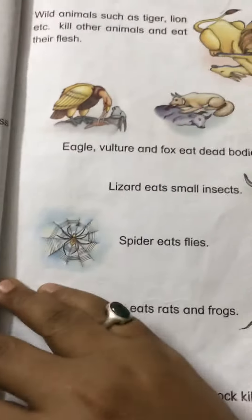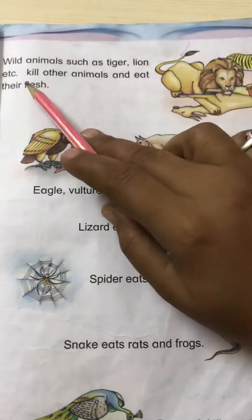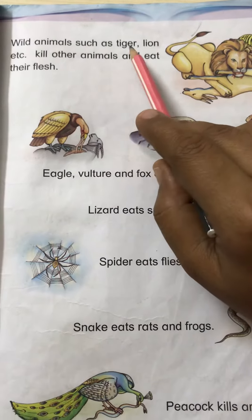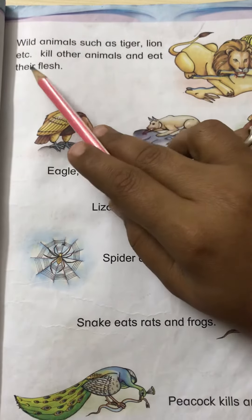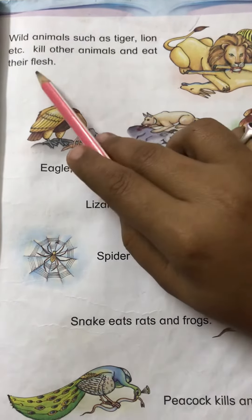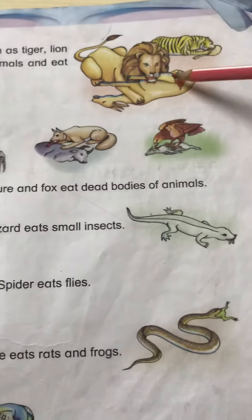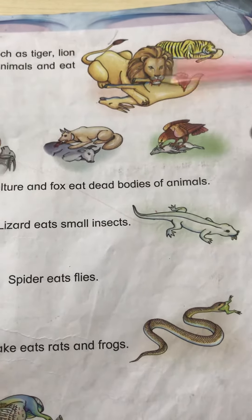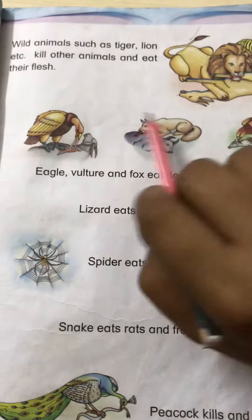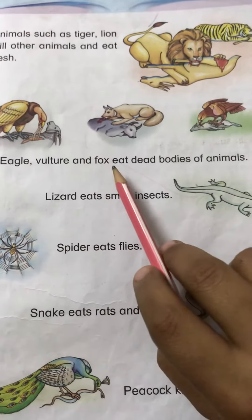Next, wild animals — wild animals such as tiger, lion, etc. kill other animals and eat their flesh. So tiger and lion kill other animals and eat their flesh.